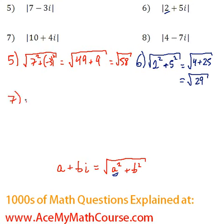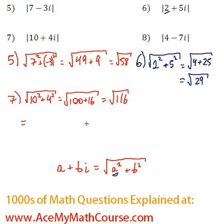How about number 7? Here we have the square root of 10 squared plus 4 squared. That would be the square root of 100 plus 16, which is the root of 116. I can simplify this slightly. 116 is actually just 4 times 29, so I can rewrite this as just 2 root 29.